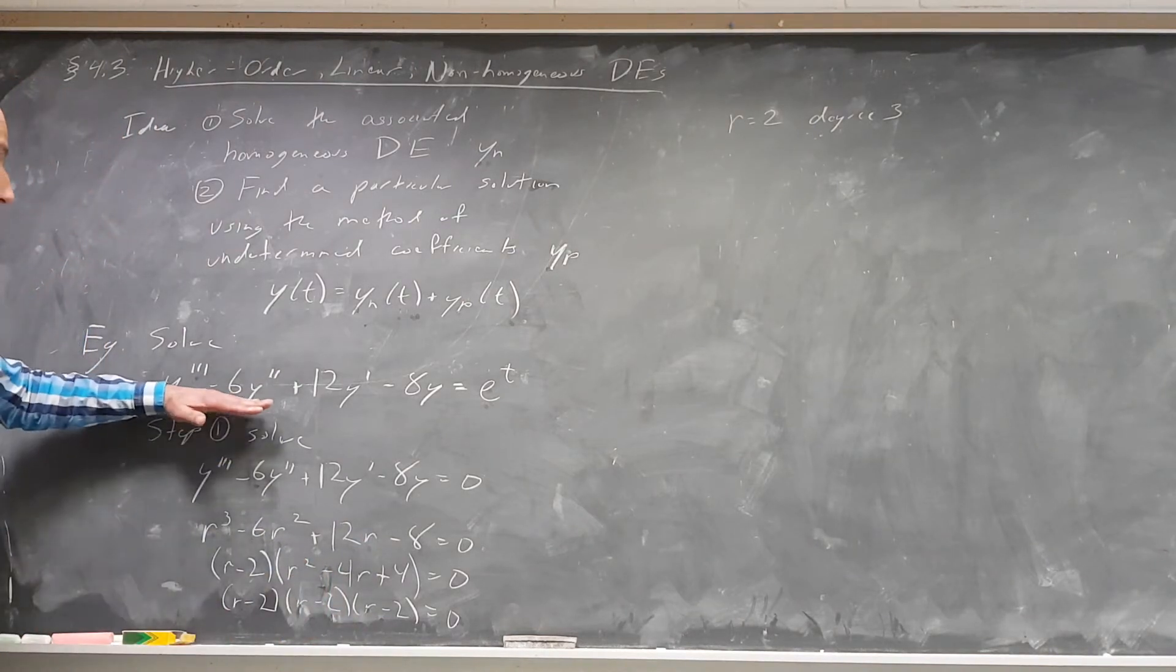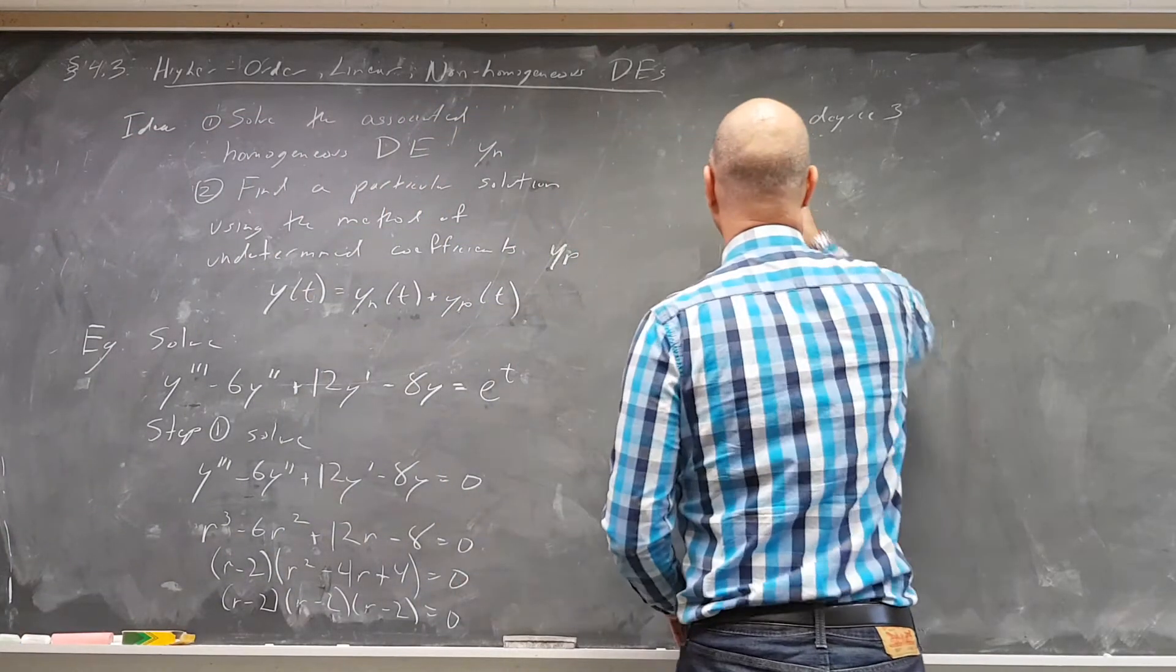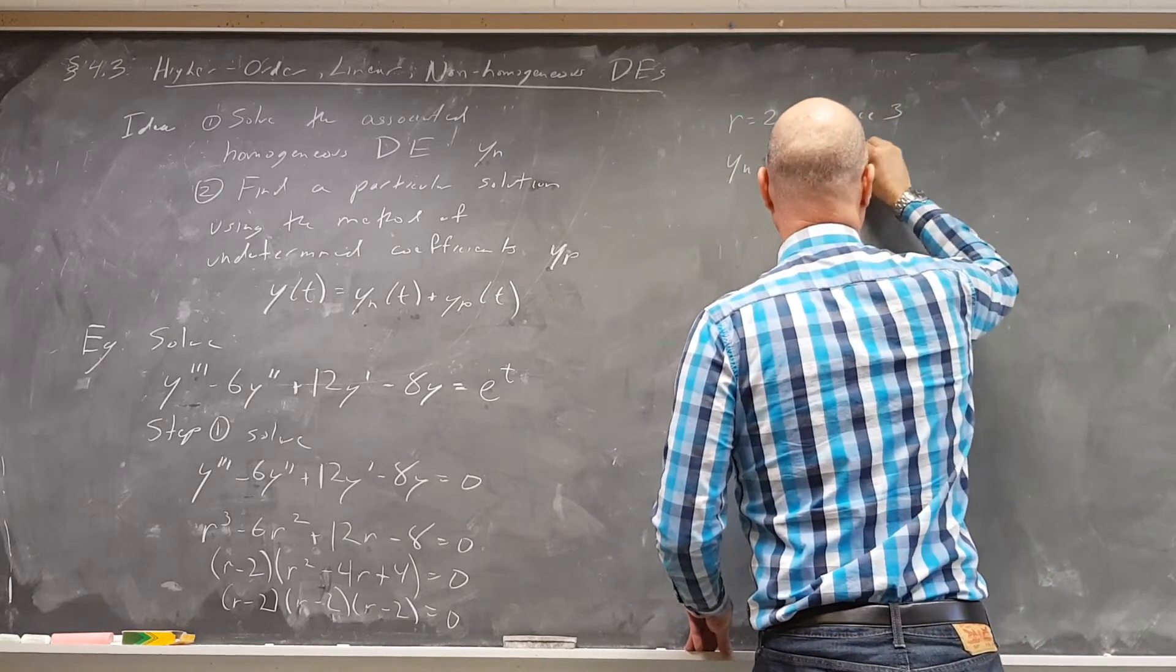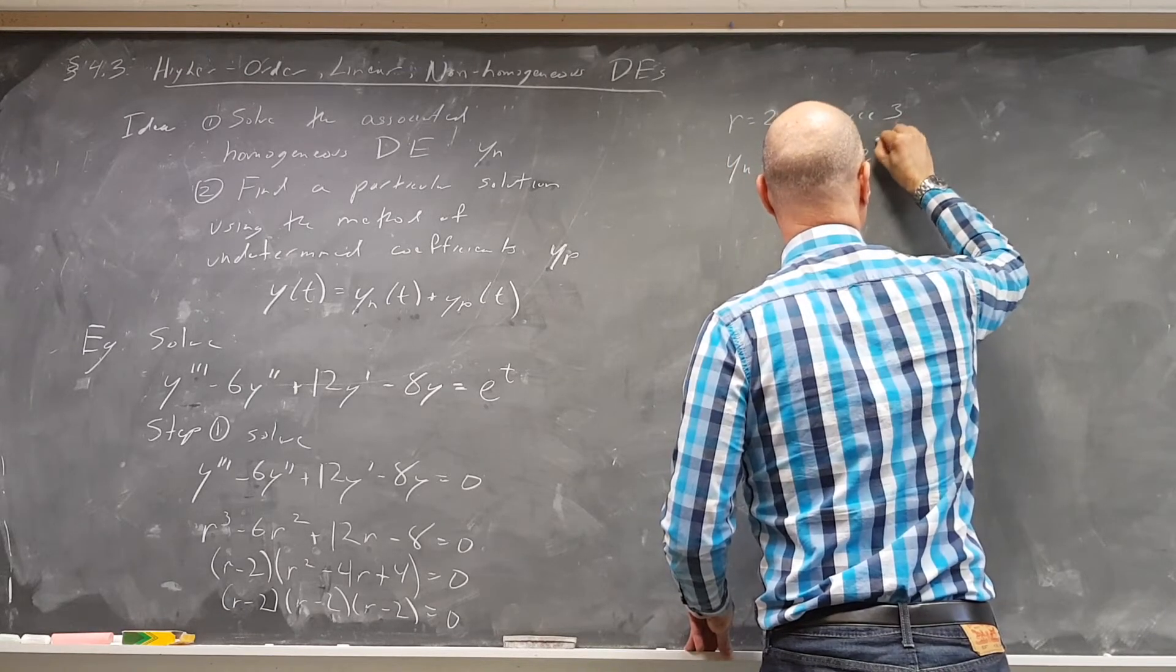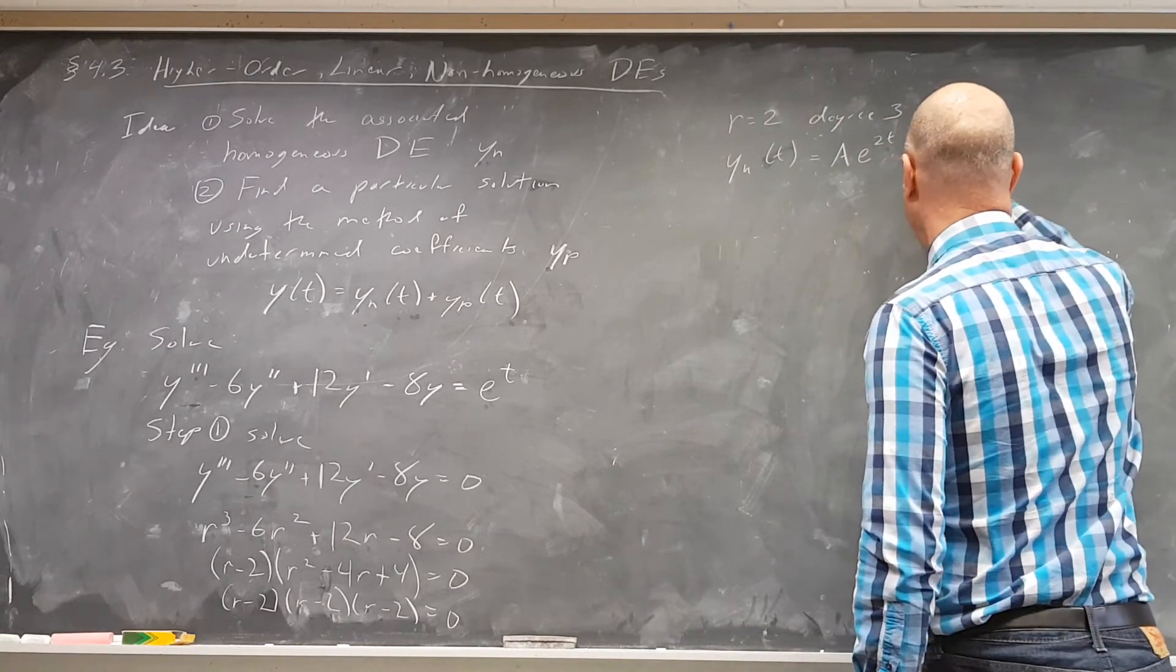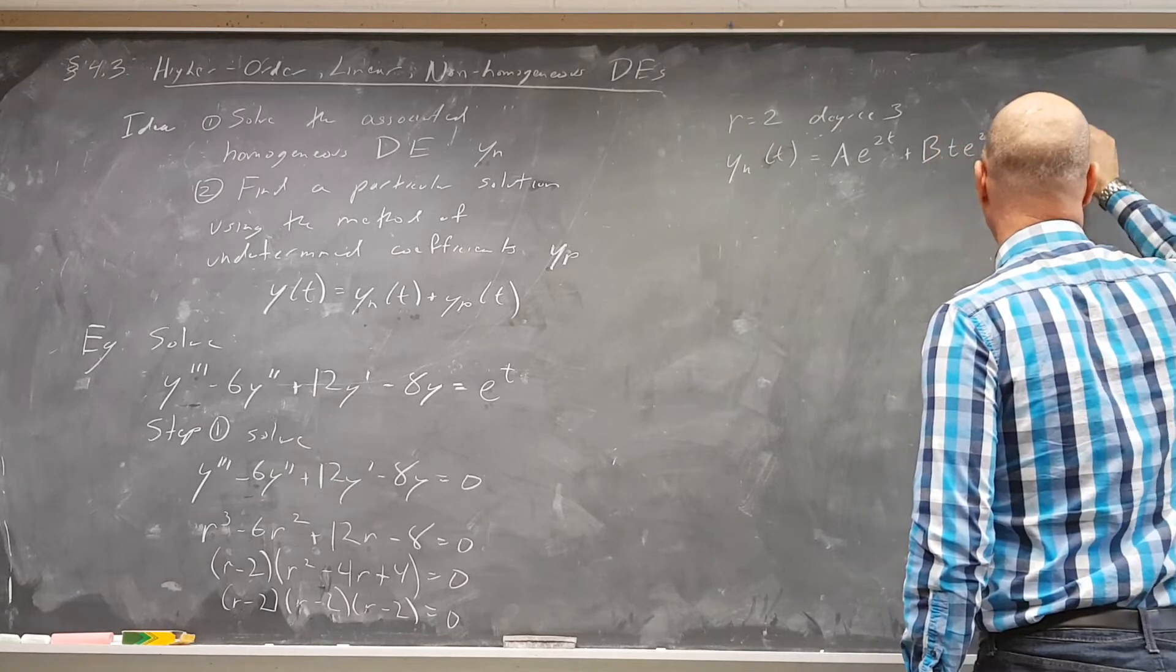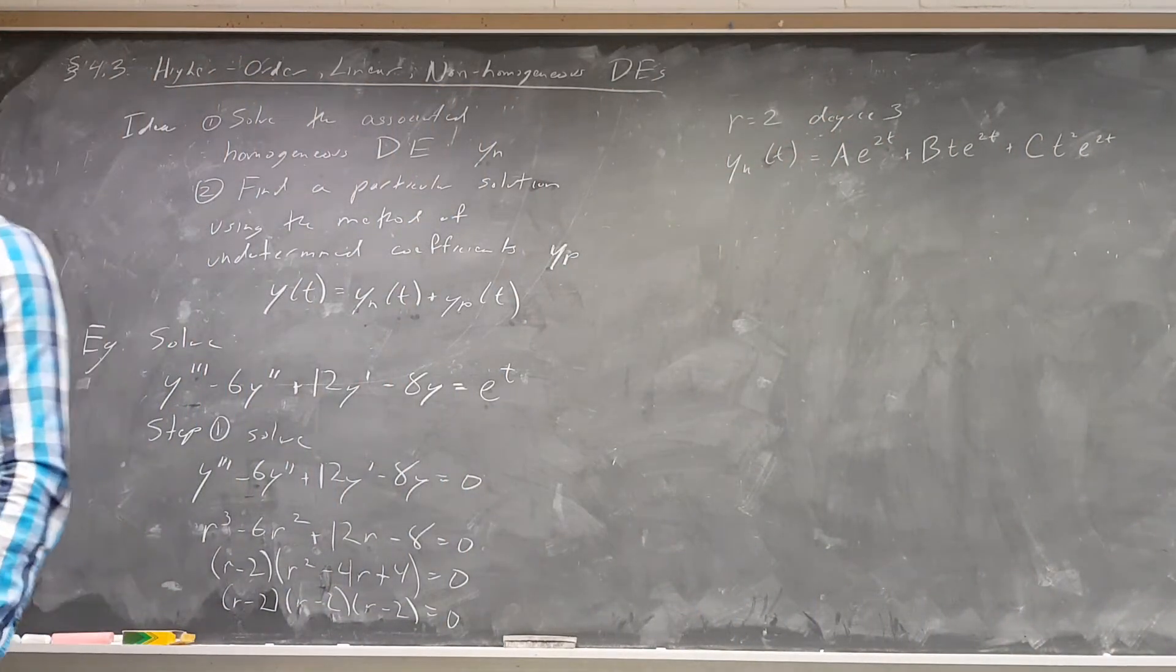So we know right away the solution to this, oops, sorry, to the homogeneous differential equation. We know that y sub h is going to be, y sub h of t is going to be some number, which I can call a, e to the 2t. This 2 is that 2, plus some other number. You can call it a2 if you want. I'm just going to call it b right now, times t e to the 2t, plus some other number, which I'll just call c right now, t squared e to the 2t. We saw what happened last time when we had a repeated root.